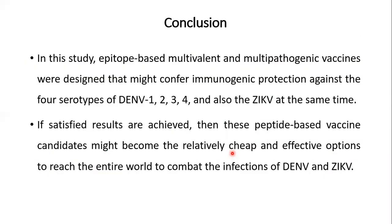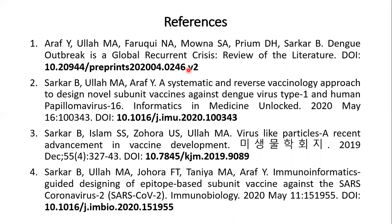In this study, epitope-based multivalent and multipathogenic vaccines were designed that might confer immunogenic protection against the four serotypes of Dengue virus, 1, 2, 3, 4 and also the Zika viruses. And if satisfactory results are achieved in the later in vitro and in vivo studies, then these vaccines can be used by the entire world to combat the infections of Dengue virus and Zika virus.